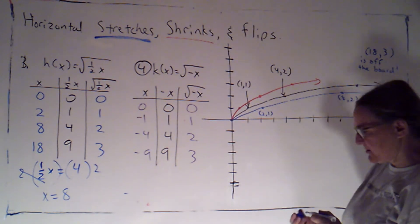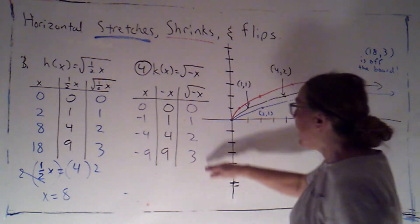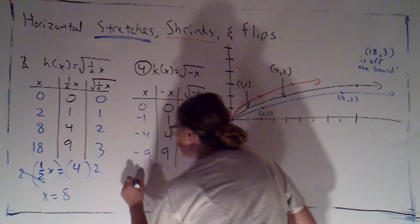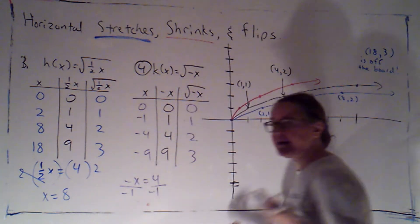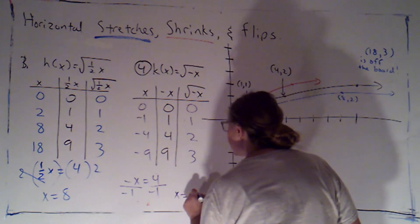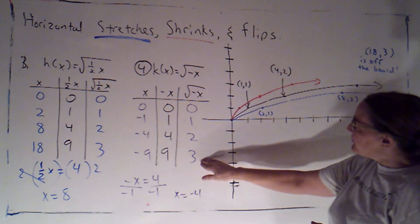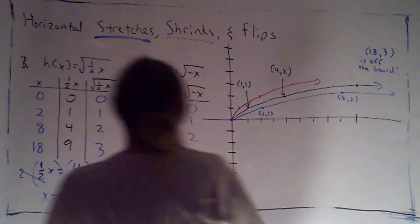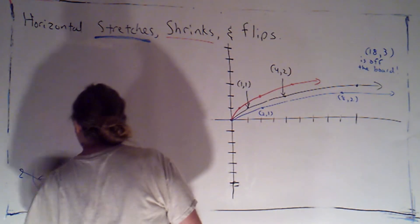When we look at k of x, which was the square root of the opposite of x, again we're getting the same y values. But now, let's again look at this point. If the opposite of x is equal to 4, in order to solve for x, I'd divide both sides by negative 1, or equivalently, multiply both sides by negative 1. x would be negative 4. So I'm associating these y values with the opposite x value. Let me just erase the table so that I've got some space to actually show that graph.